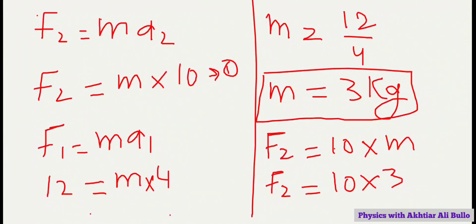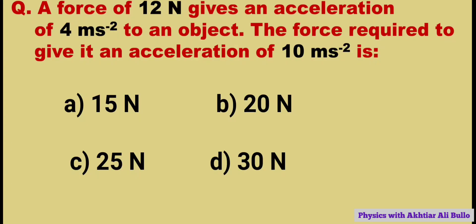Because 10 into 3 will be equal to 30, so the correct option is d) 30 newtons. This means the force required to give an acceleration of 10 meters per second squared is 30 newtons.